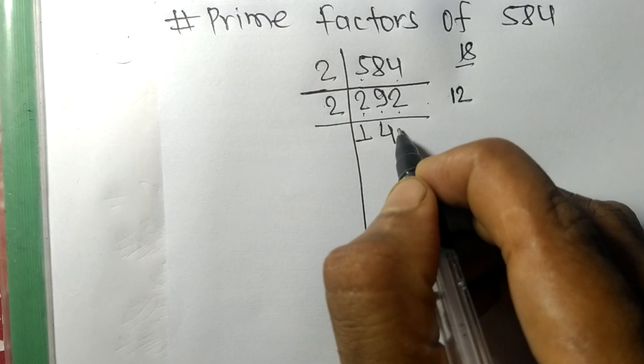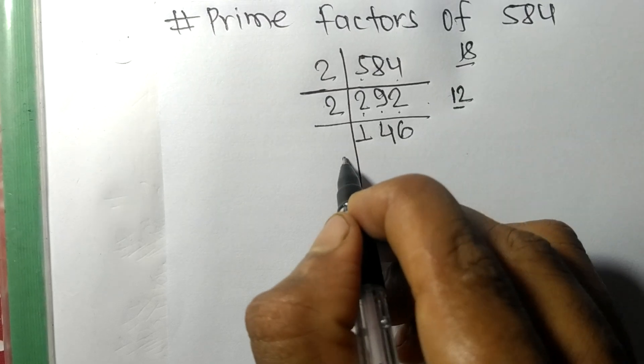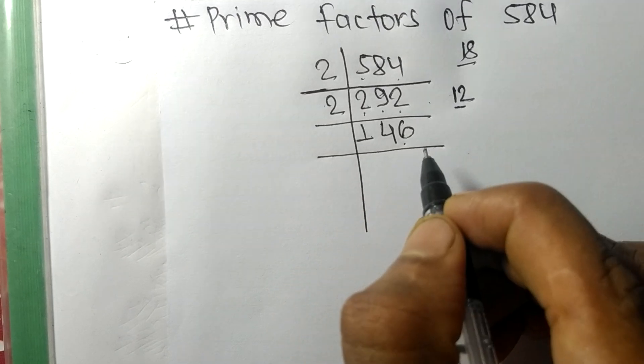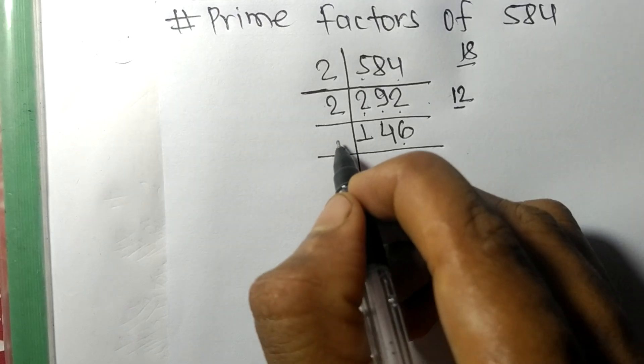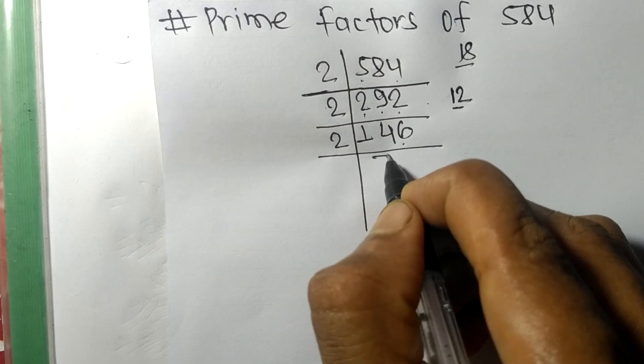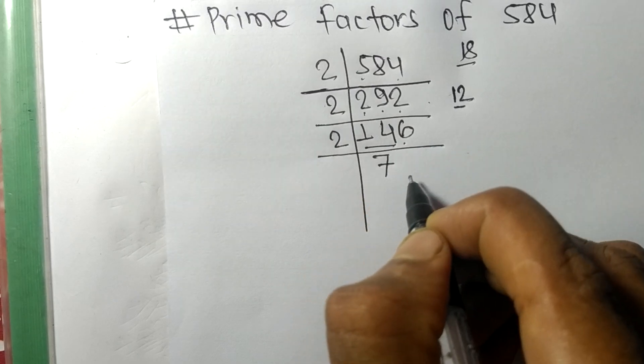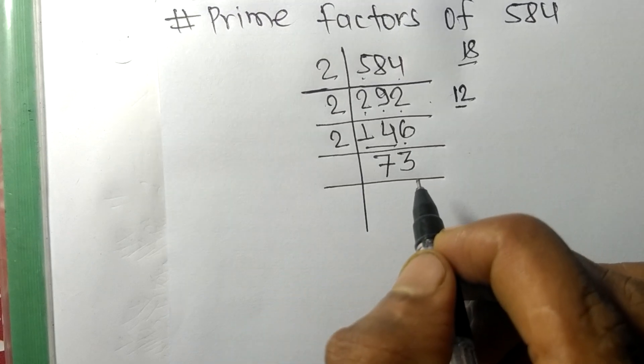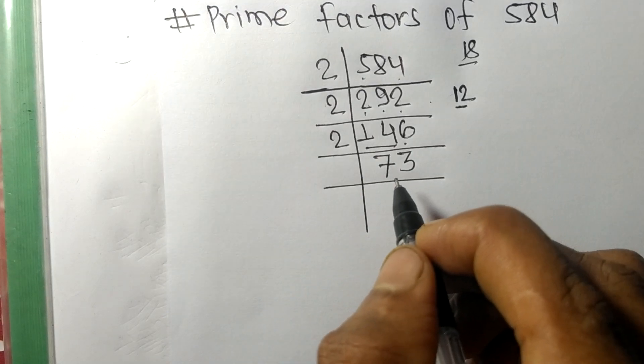Again we have an even number 6 at last, so it is divisible by 2. 2 times 7 is 14, 2 times 3 is 6. Now we got 73 which is our prime number.